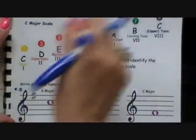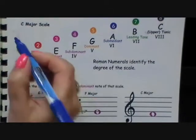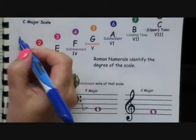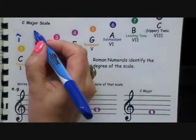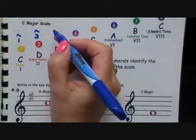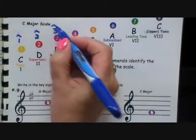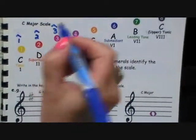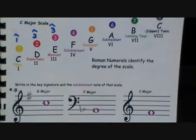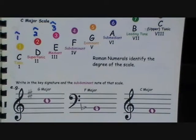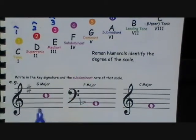All it is is the degree of where the note is — so 1 with a caret, 2 with a caret — it just tells you the degree of the scale. Let's get right to the type of question you could get asked: write in the key signature and the subdominant note of that scale.